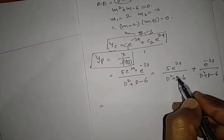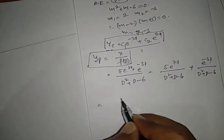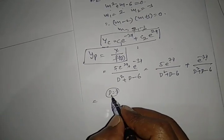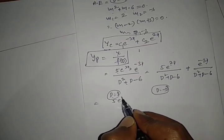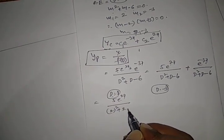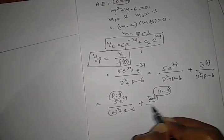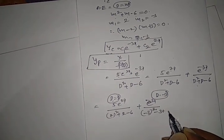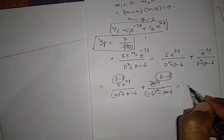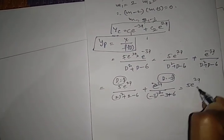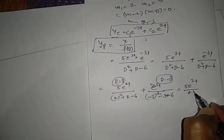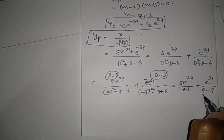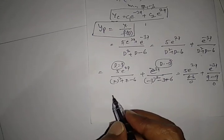For the first term, the x coefficient is 2 so substitute D = 2; for the second term, substitute D = -3. Substituting D = 2 in the first term: 5e^(2x) / (4 + 2 - 6) = 5e^(2x) / 0. For the second term with D = -3: e^(-3x) / (9 - 3 - 6) = e^(-3x) / 0. Both give zero in the denominator.